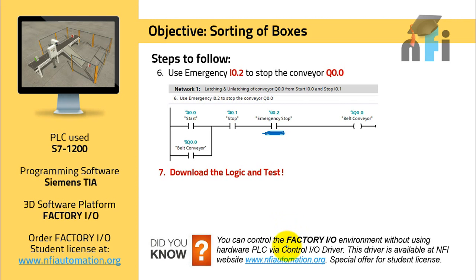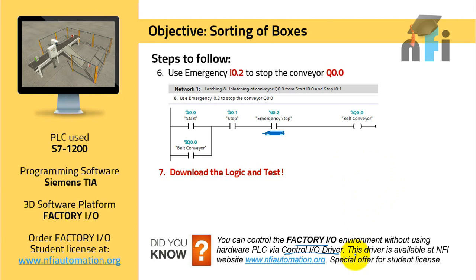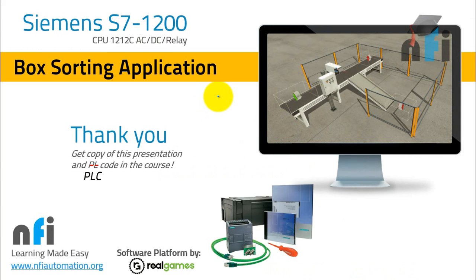If you want to control a factory environment but don't have a PLC, you can use the Control IO driver inside Factory IO to write your logic without needing a Siemens S7 1200 or TIA software. You can only write in FBD (Functional Block Diagram), but if you're comfortable with that, it's a great option. You can find more information on the Factory IO website. This was all about the box sorting application and understanding basic commands with ladder instructions. Thank you, and I'll see you in the next video.